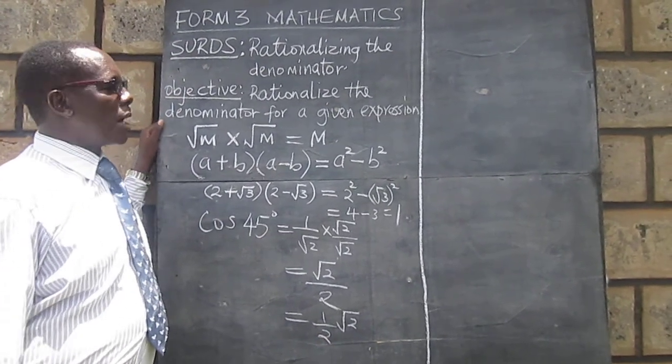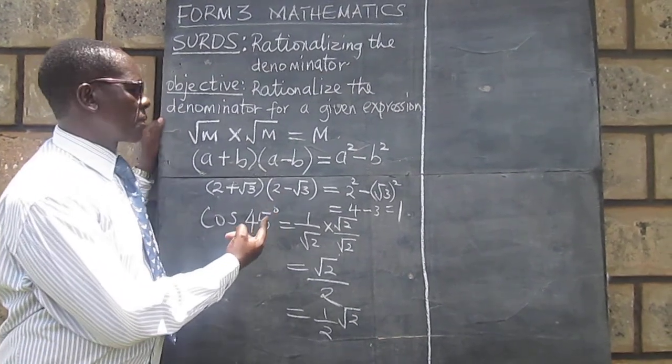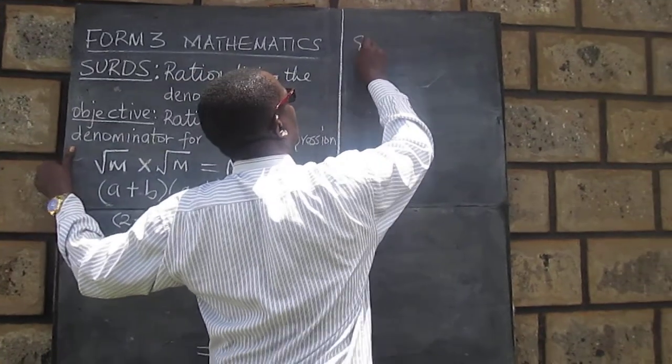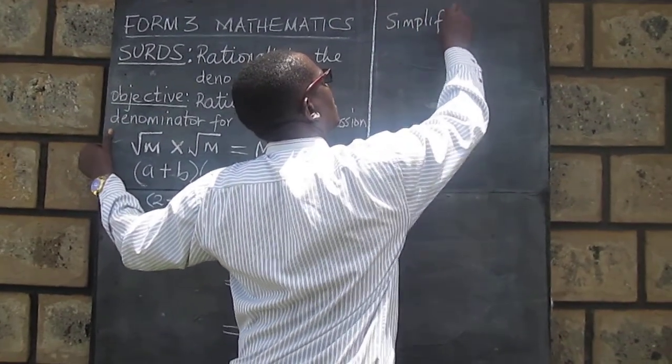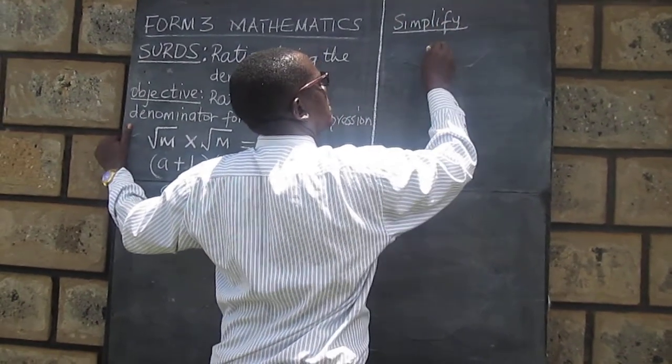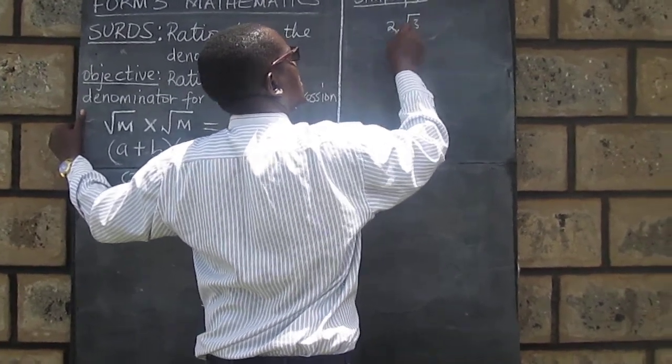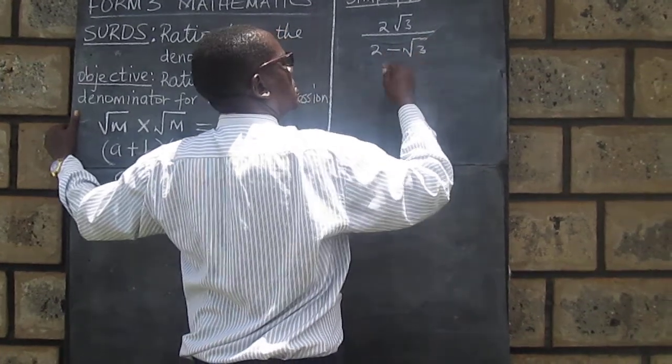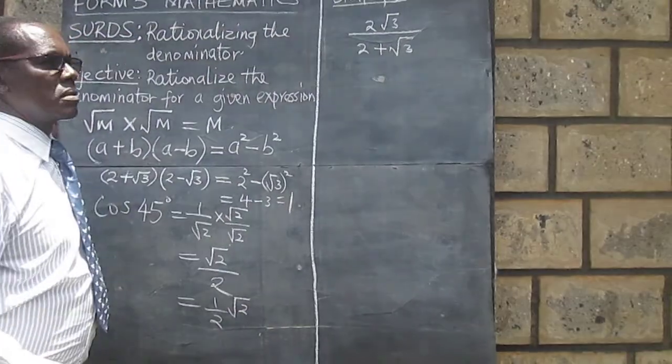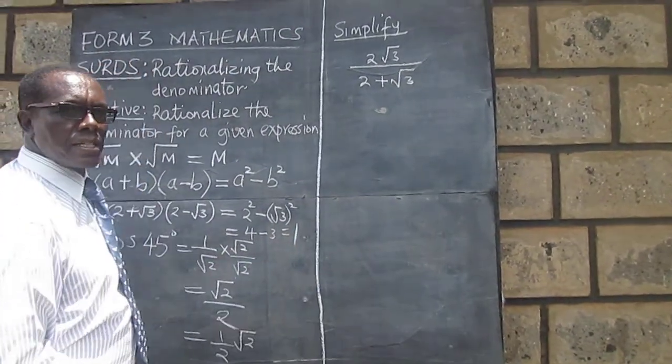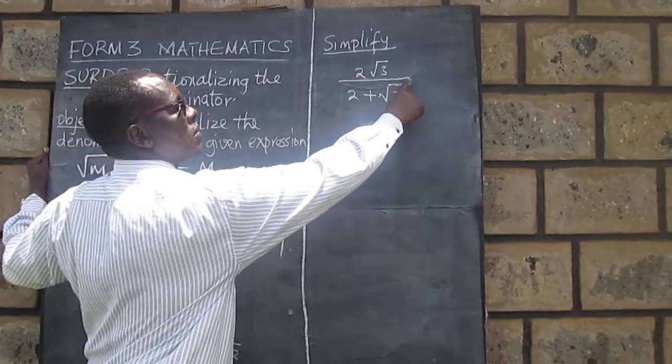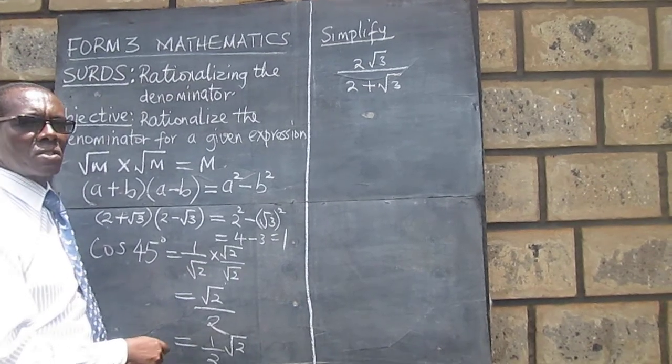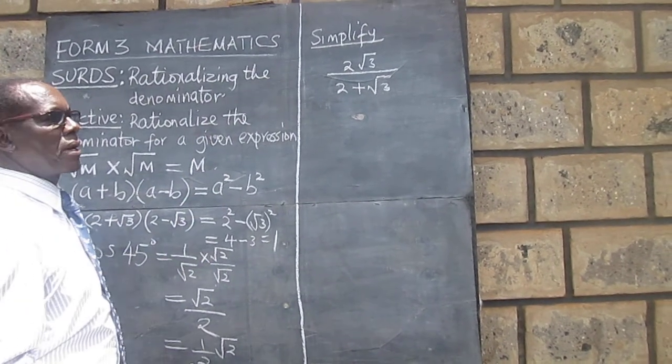We want to look at another example where we can now apply the idea of conjugate. So in this case, we have to look for the conjugate of this one. And again remember, we will not change the given expression, so we must write it in such a way that we multiply by 1.